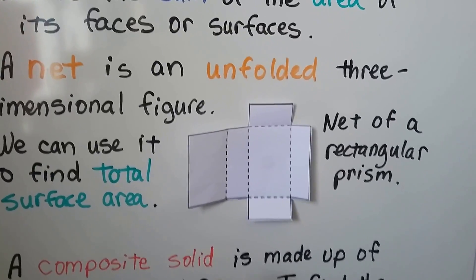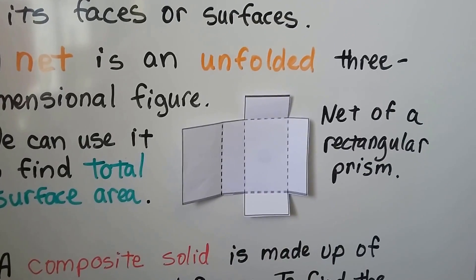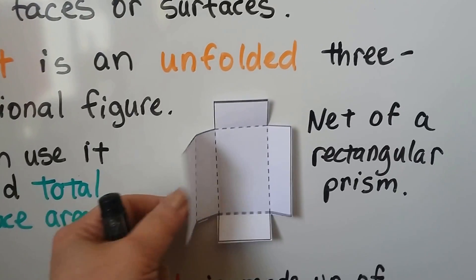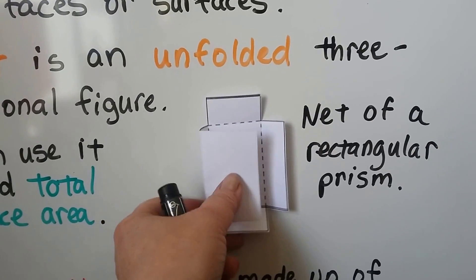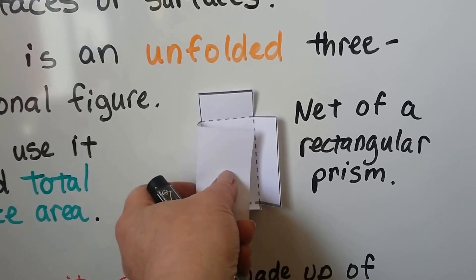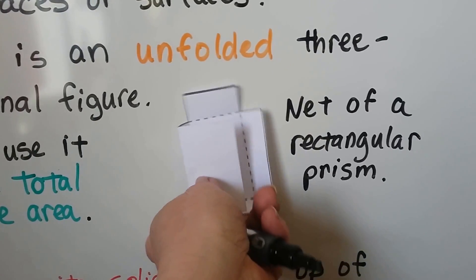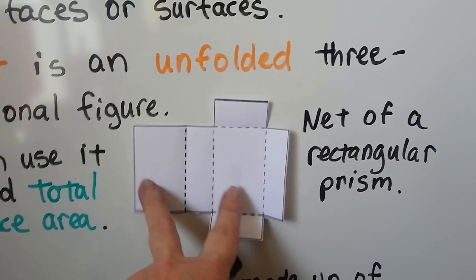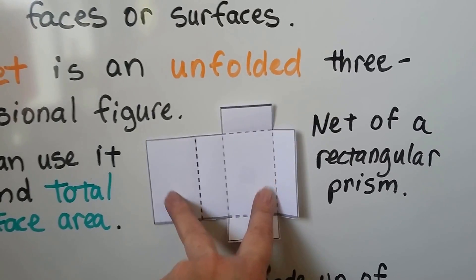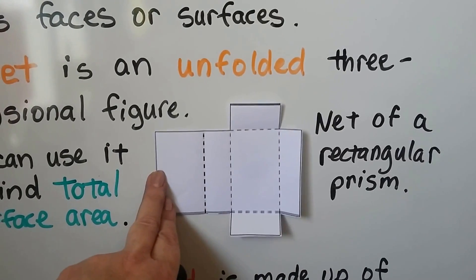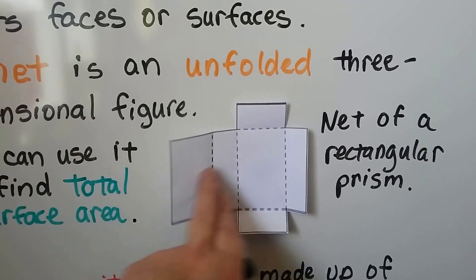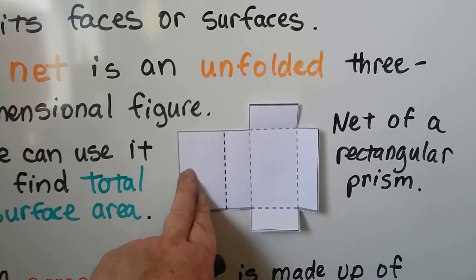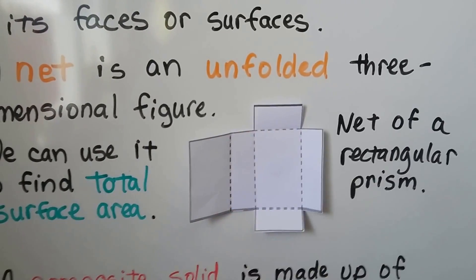This is the net of a rectangular prism. If we fold it on the dotted lines and tape it together, we can actually make a rectangular prism. When we look at this, we can see all the rectangles to find surface area.